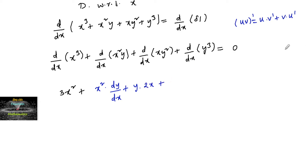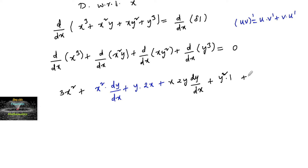For xy², again applying the product rule: x times the differentiation of y², which is 2y·(dy/dx) by the chain rule, plus y² times the differentiation of x, which is 1. The differentiation of y³ gives 3y²·(dy/dx), and the whole expression equals zero.